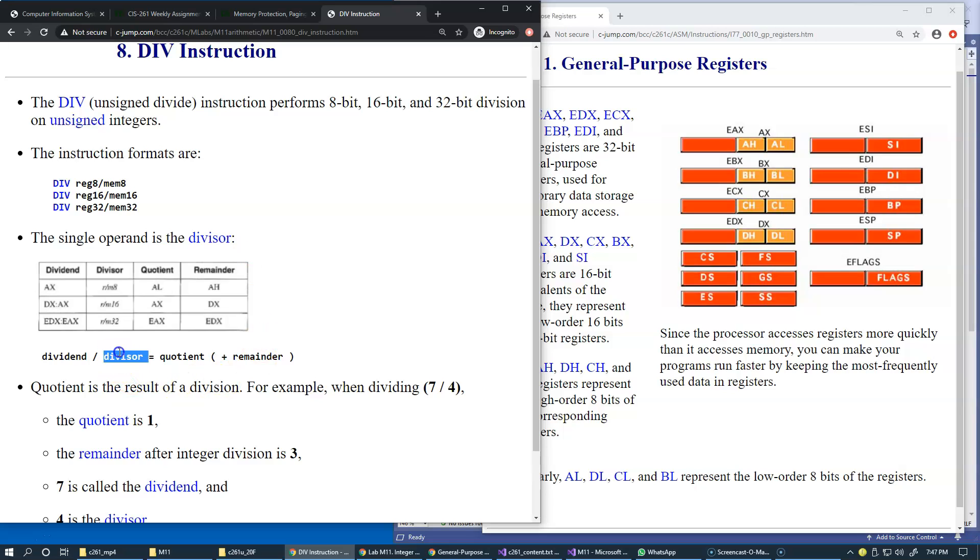The single operand is the divisor, the value by which we're dividing. The dividend is going to be predefined in the combination of register AX, AX combined with DX, or in case of 32-bit divisor, the combination of EDX and EAX. The outcome of this division, because this is integer division not floating point division, is we're going to get both a quotient and the remainder.